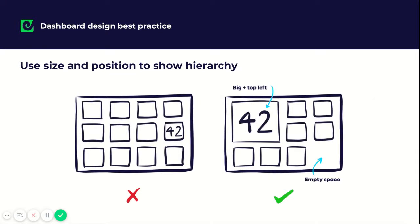Use size and position to show hierarchy. We always advise that you put your most important numbers in the top left-hand corner. That's because that's where the eye is naturally drawn when you're looking at a dashboard. And you can size that number up so that it emphasizes the importance.